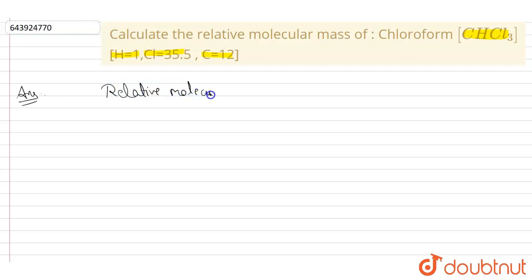The relative molecular mass of chloroform, that is CHCl₃, equals—for finding out the molecular mass, we will multiply each atom with its atomic mass and add all of them.